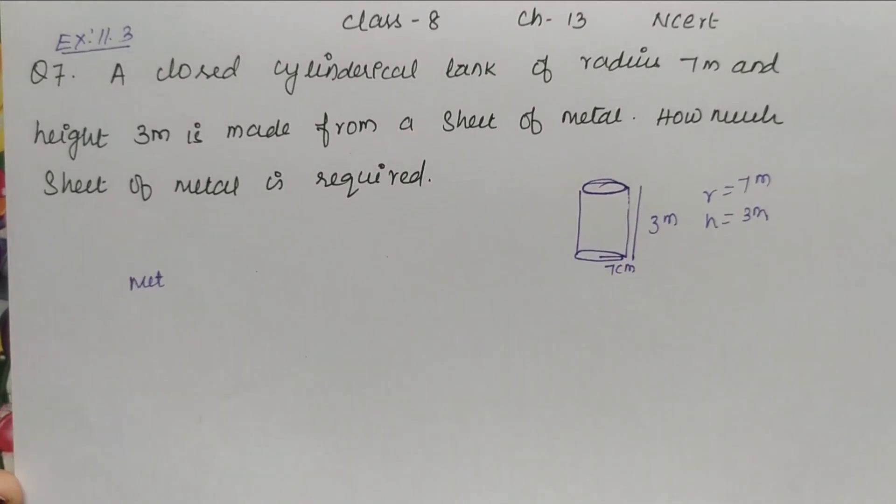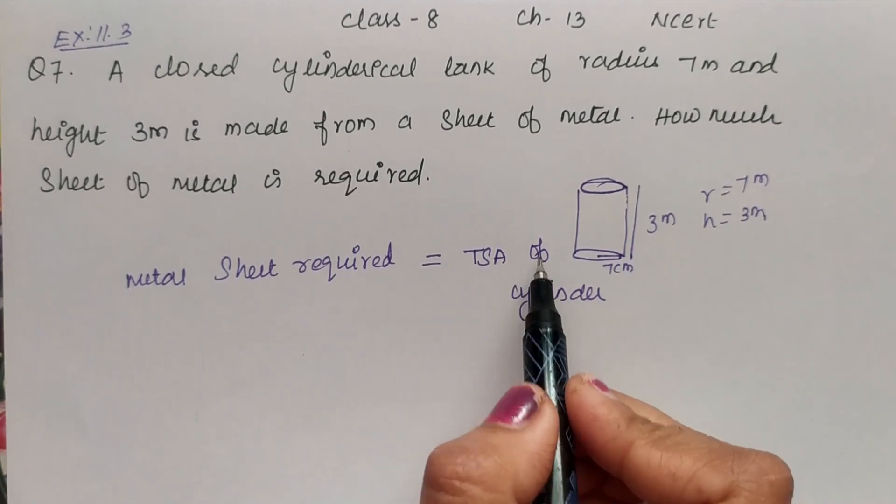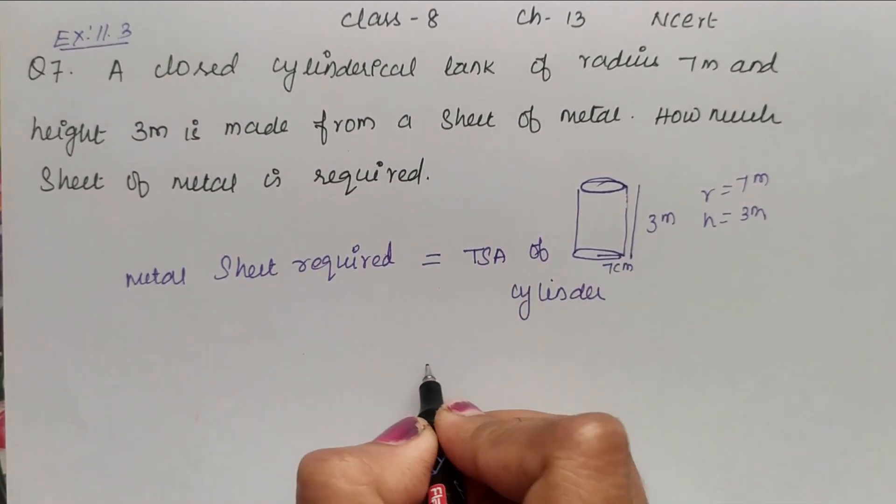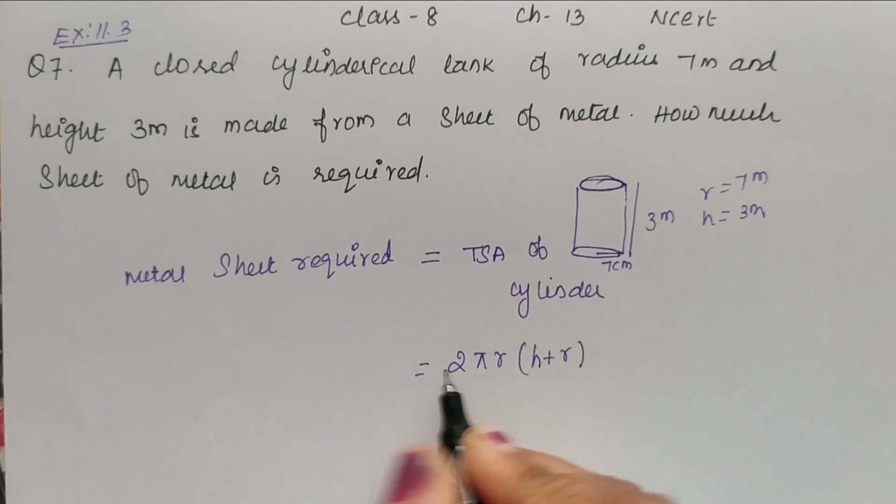Which means we have to find the total surface area of the cylinder. Now metal sheet required is equal to total surface area of a cylinder. So total surface area of a cylinder is 2πR into H plus R.